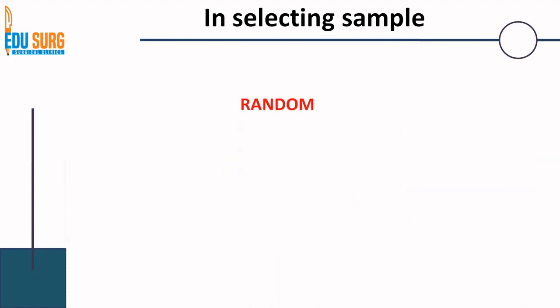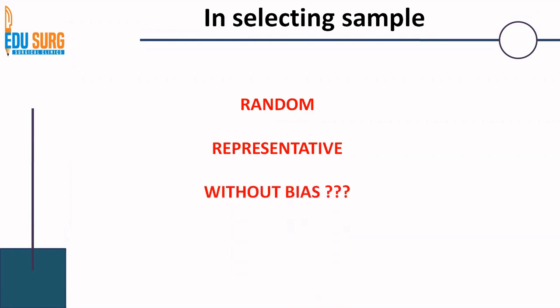When selecting a sample from a heterogeneous population, the selection has to be random. That is, the sampling has to be random in a way that the sample is representative of the population. A lot of questions are asked on bias in sampling — but can there be a sample without bias? We will see this in upcoming videos, but a simplified answer is that there will always be some bias in creating a sample from the population. The aim of statistical techniques is to reduce that bias.